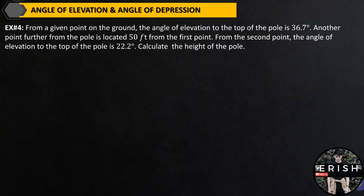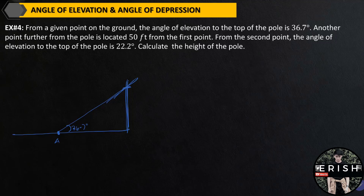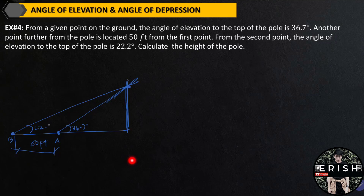Example number 4. From a given point on the ground, the angle of elevation to the top of the pole is 36.7 degrees. This is the ground and this is our pole. From the first point (point A), the angle of elevation to the top of the pole is 36.7 degrees. Another point further from the pole — located 50 feet from the first point (point B) — has an angle of elevation to the top of the pole of 22.2 degrees.